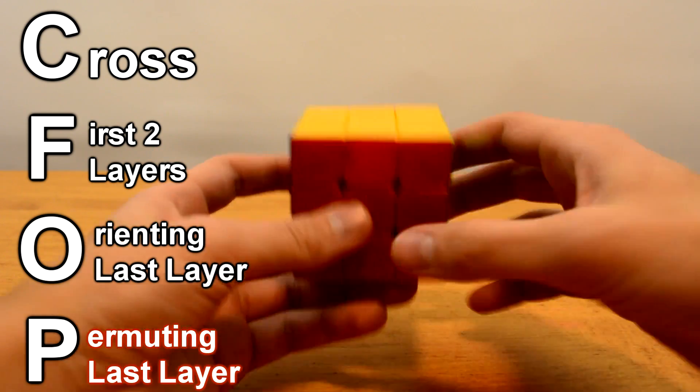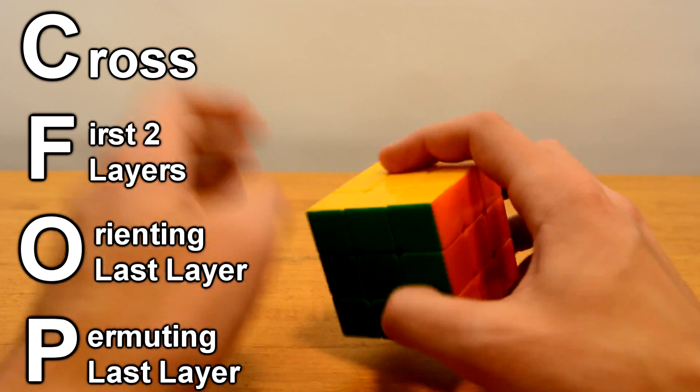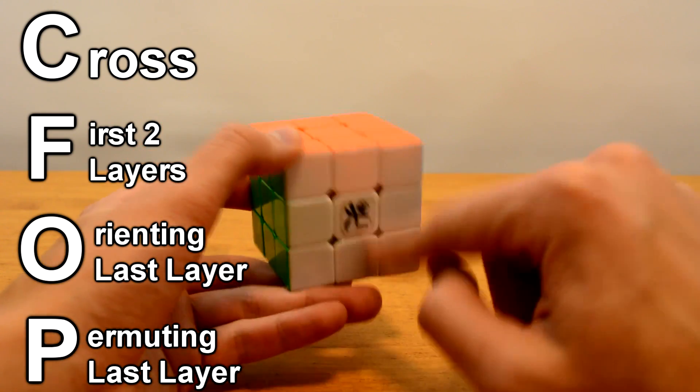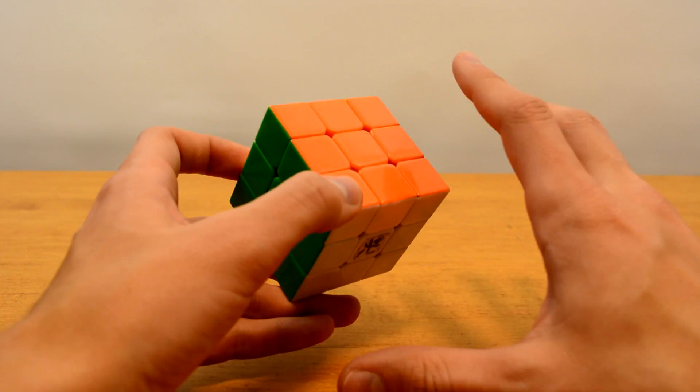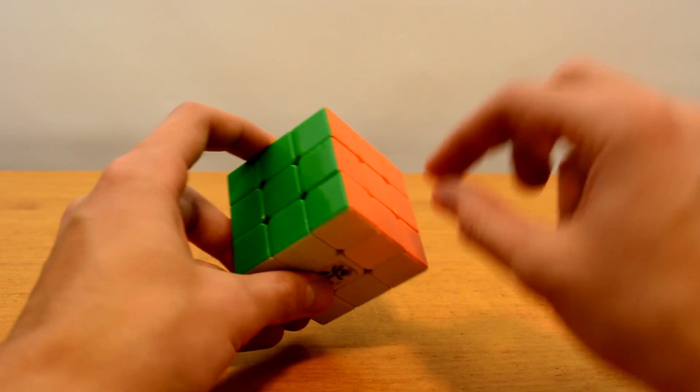Now once you master all these techniques, the beauty of this and the reason it allows you to solve it so much quicker is because you will be able to optimize your cross solving capabilities and you'll be able to solve the cross in about six or seven moves on average. The first two layers will be completed at the same time instead of building the first layer first and then the second layer.